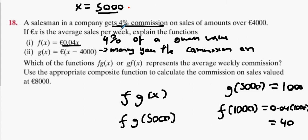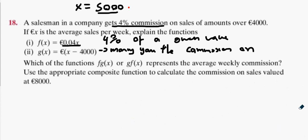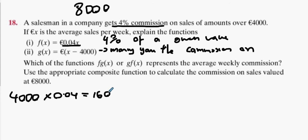Now it wants me to use the composite function to calculate the answer. It wants me to use the composite function and do it all in one step. Now there's a way of checking your answer here. If I've sold €8000 worth, how much of the sales am I getting commission for? Would everybody agree it's going to be €4000 multiplied by 4%, which is €160? Alright, so let's do the function f(g(x)).